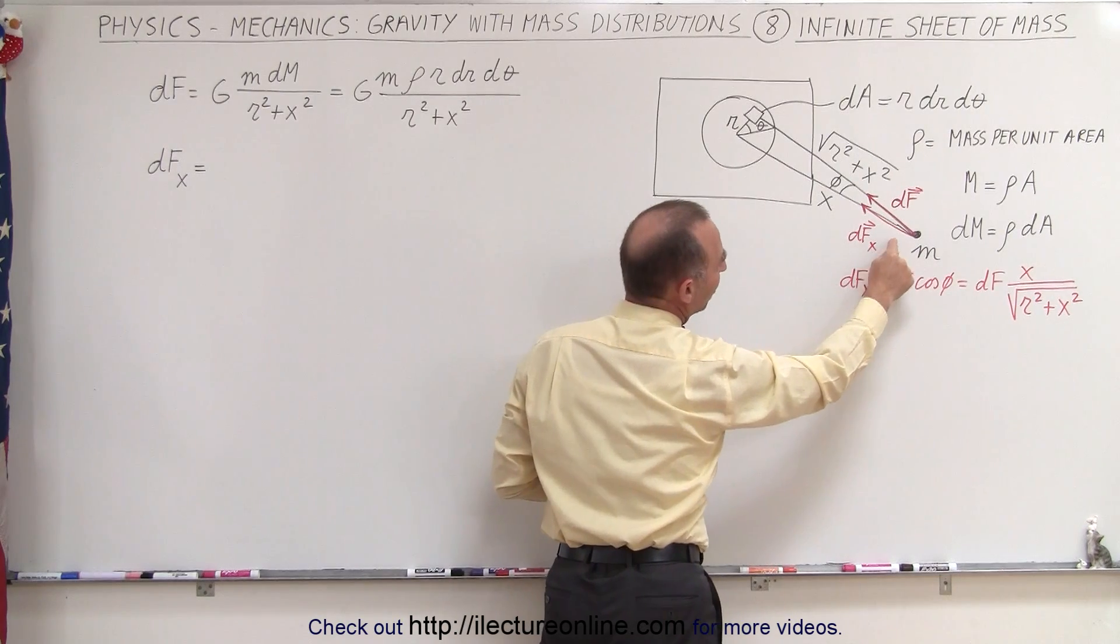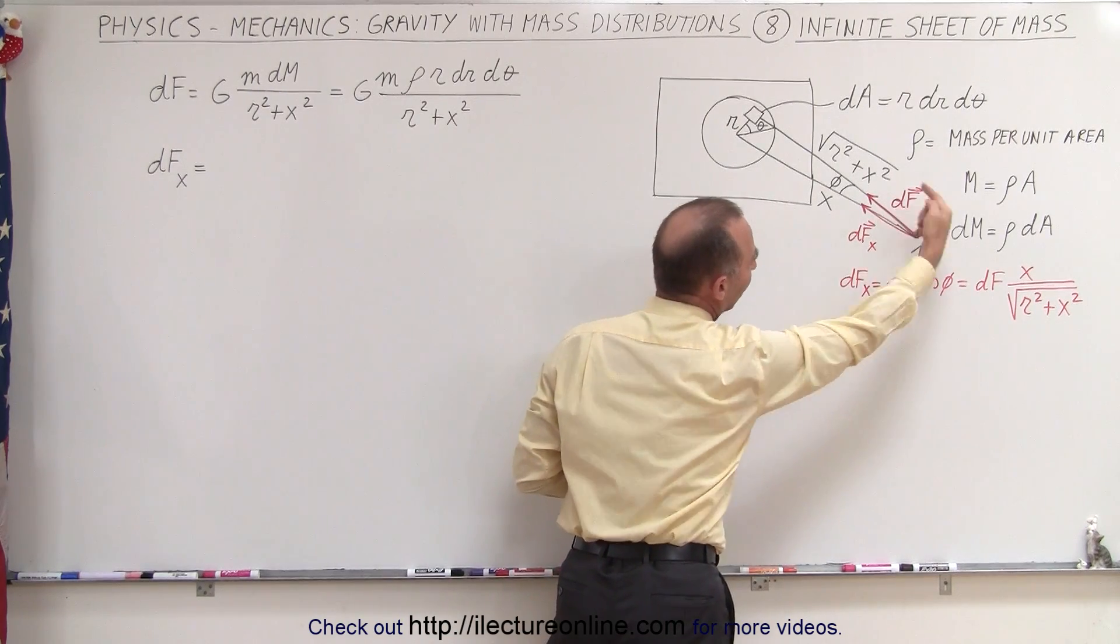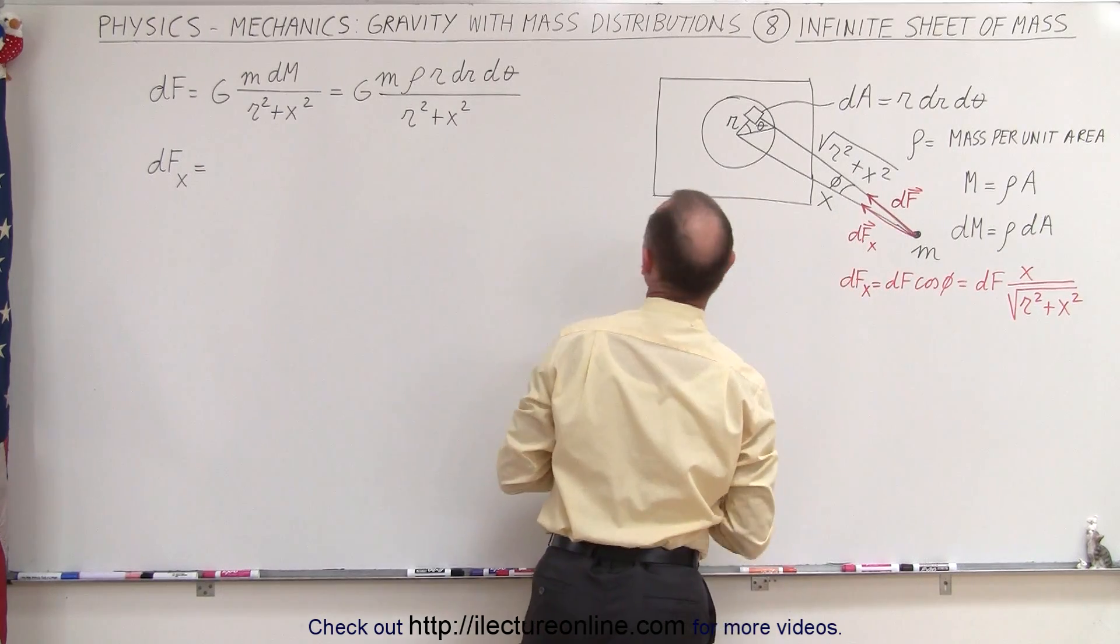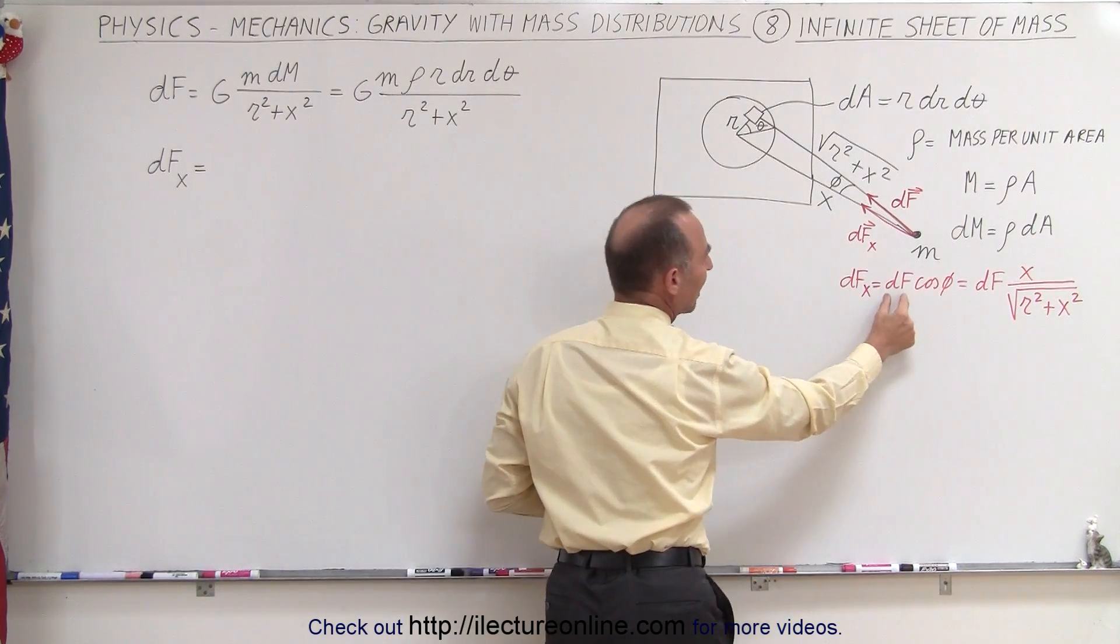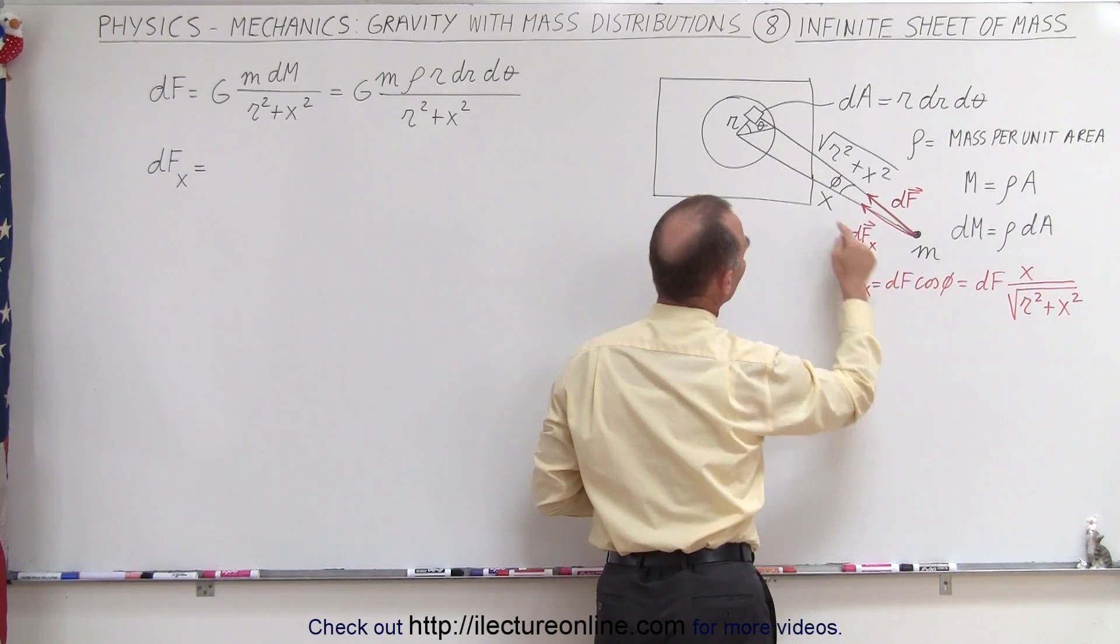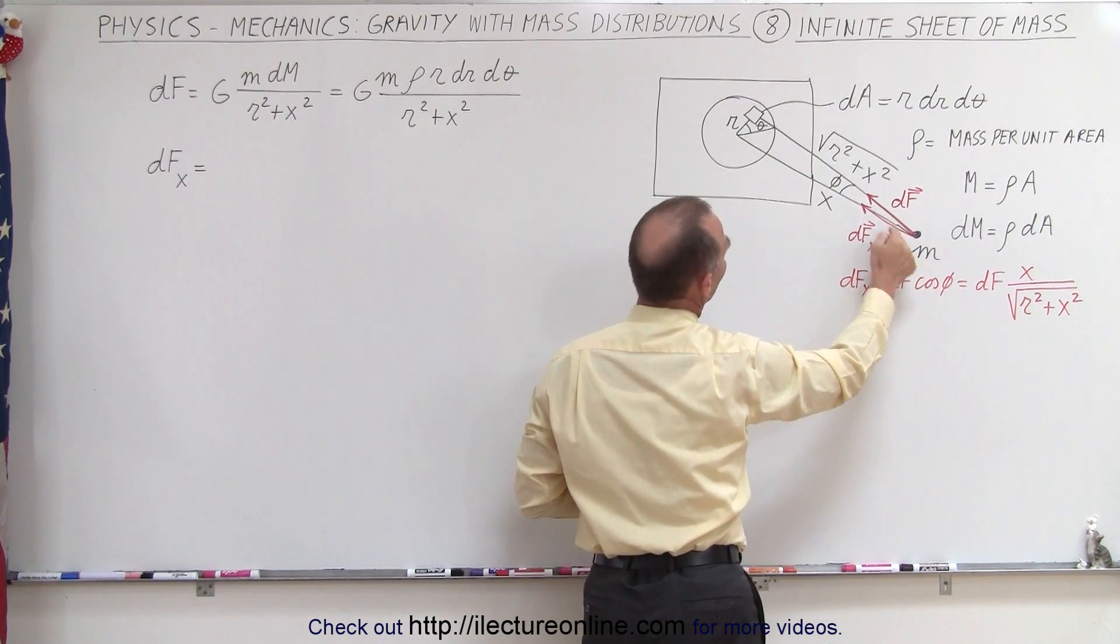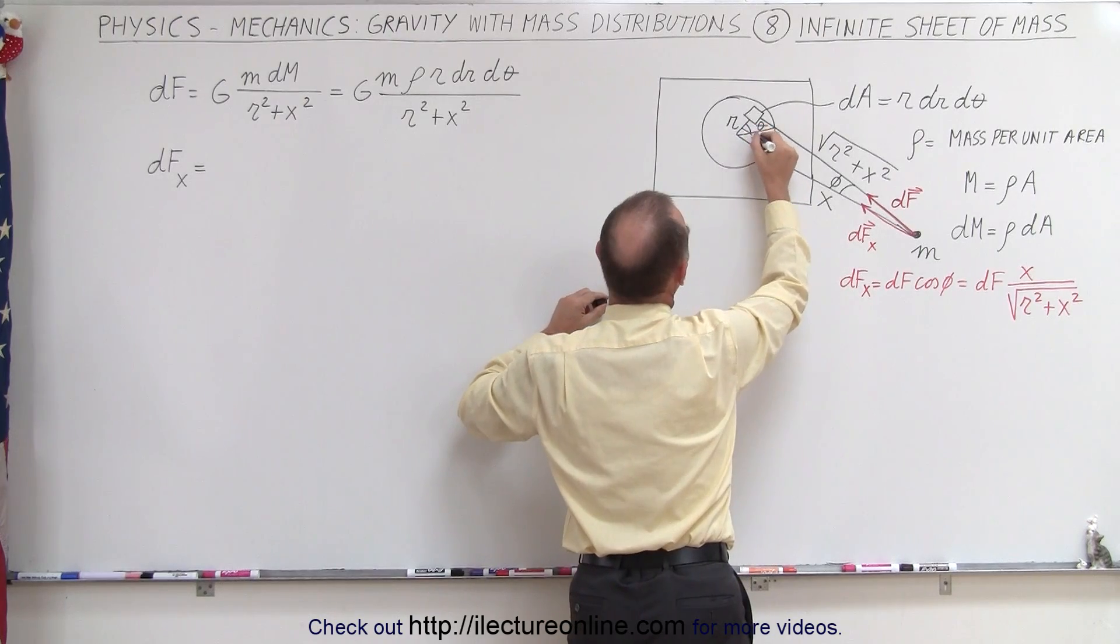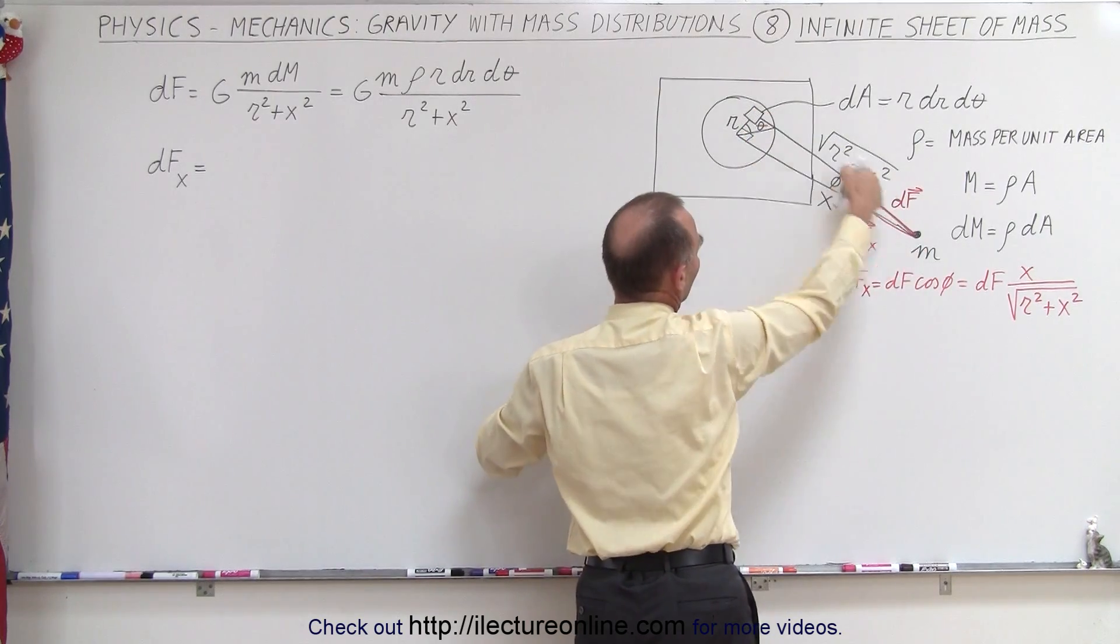But we only want to take the x component because all the y components will cancel out as we rotate all the way around. So we only want the x component. So we're going to multiply the dF by the cosine of phi, which is equal to the adjacent side x, divided by the hypotenuse. And notice that this here is our right angle. So this is indeed the hypotenuse of the triangle.